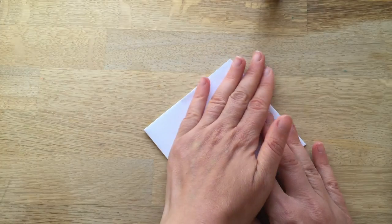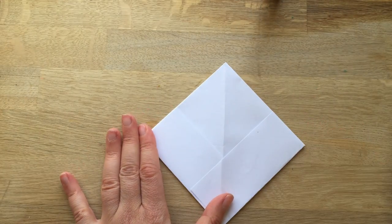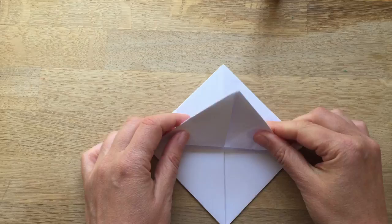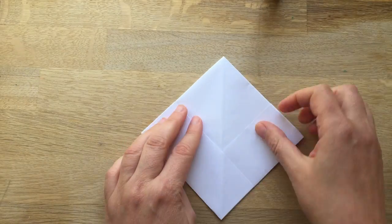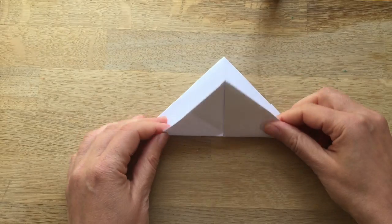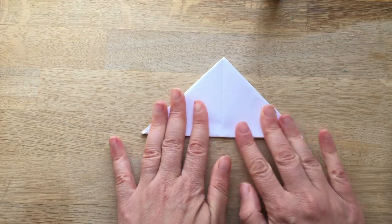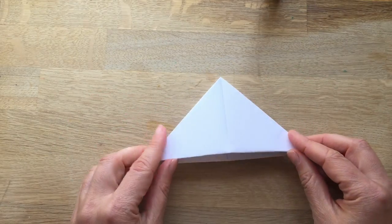...in and then you've got this diamond shape. Now you fold the bottom flap up like this. You turn it round, turn the bottom flap up like this, and you've got another triangle. Now you do the same as you did...